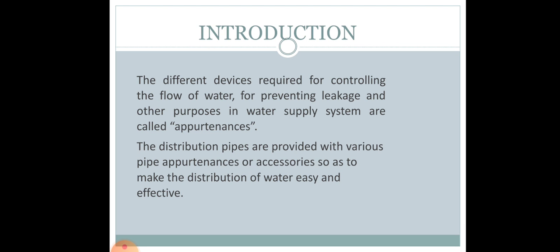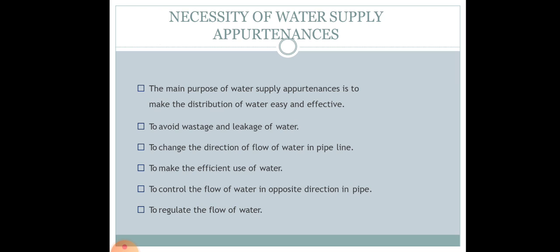What do we mean by appurtenances? In a distribution system, it mainly comprises various pipes and pipe networks as well as a number of other additional accessories which we call appurtenances. The main purpose of providing appurtenances in a distribution system is to allow the free flow of water, control water flow at required locations, prevent leakage, and serve various other purposes. Distribution pipes are provided with these appurtenances to make the distribution of water more effective and the flow of water easier.